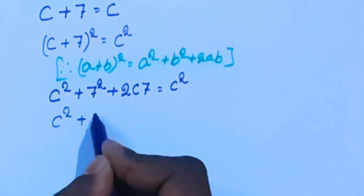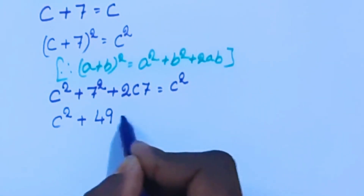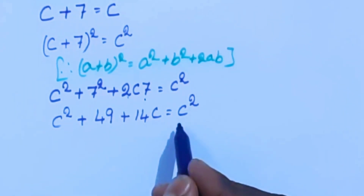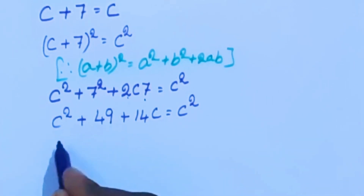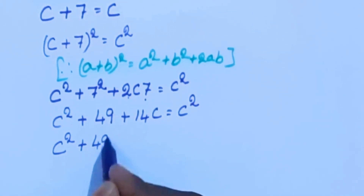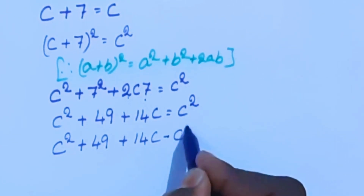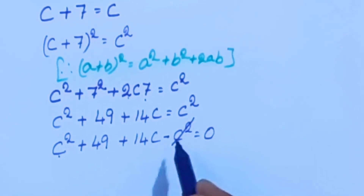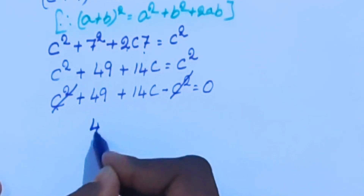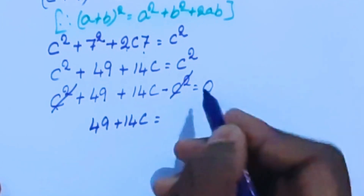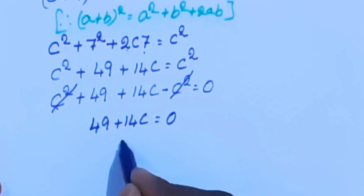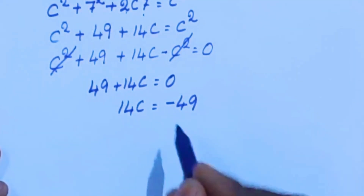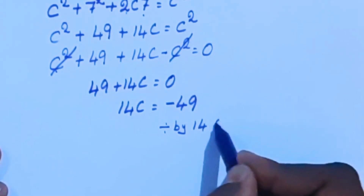So c² + 49 + 14c = c². Now we are going to bring this c² from the right-hand side to the left: c² + 49 + 14c − c² = 0. The positive c² and negative c² cancel each other, so we have 49 + 14c = 0. Moving 49 to the right-hand side: 14c = −49.